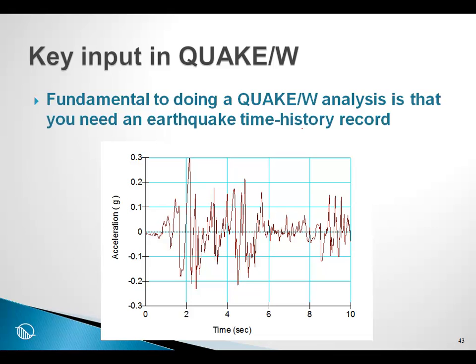One of the key input parameters in a quake-w analysis is that you need to have some time history record from an earthquake. We need to know the acceleration versus time. There are public records of such earthquake records, but once again, if you get into this area of study and want to use this type of analysis, you may have to talk to a seismologist in your area that can help you produce one of these time history records or find one that is appropriate for your site. I won't go any further details here on how you can manipulate this curve and where you can get it, except to note that it is a key piece of information that needs to be supplied for a quake-w analysis.